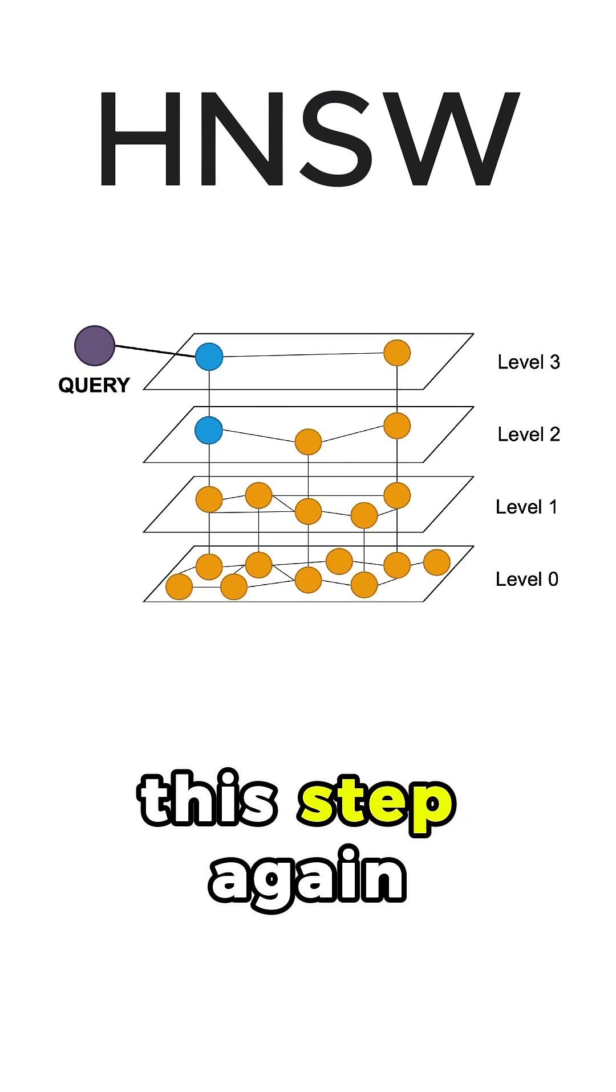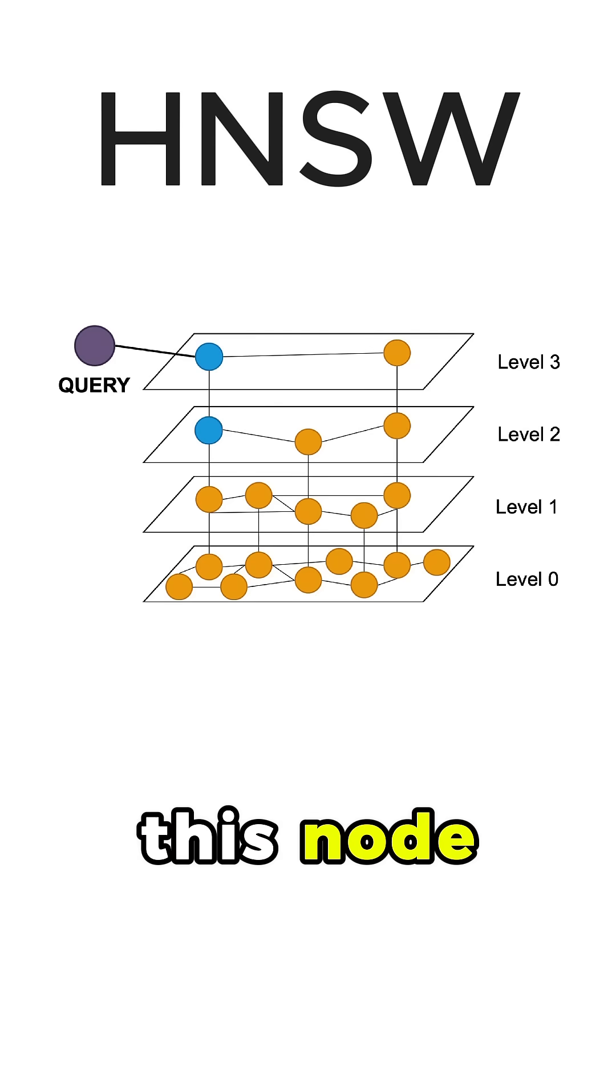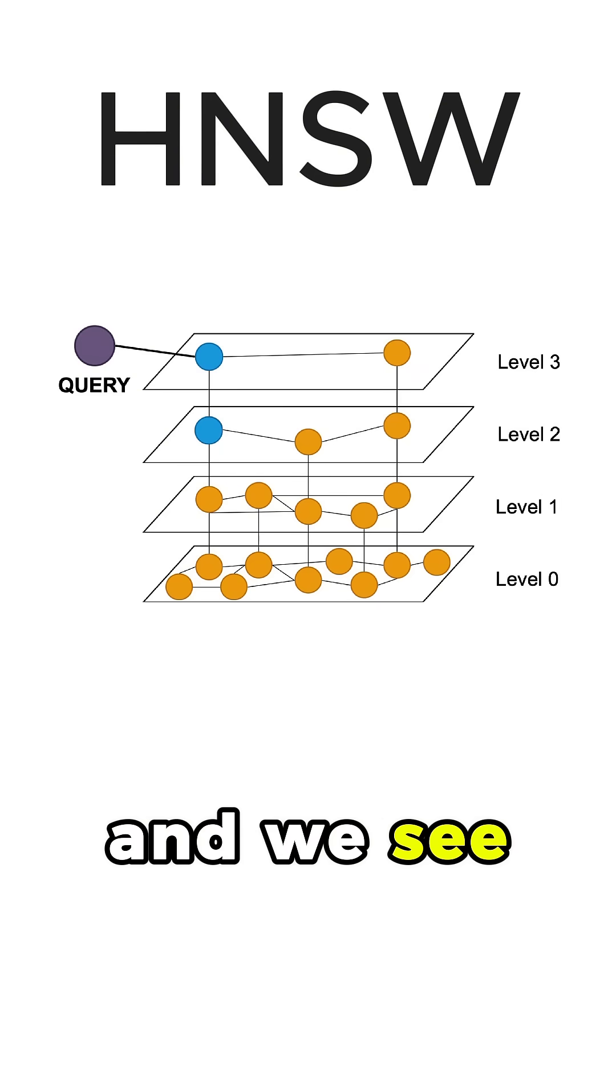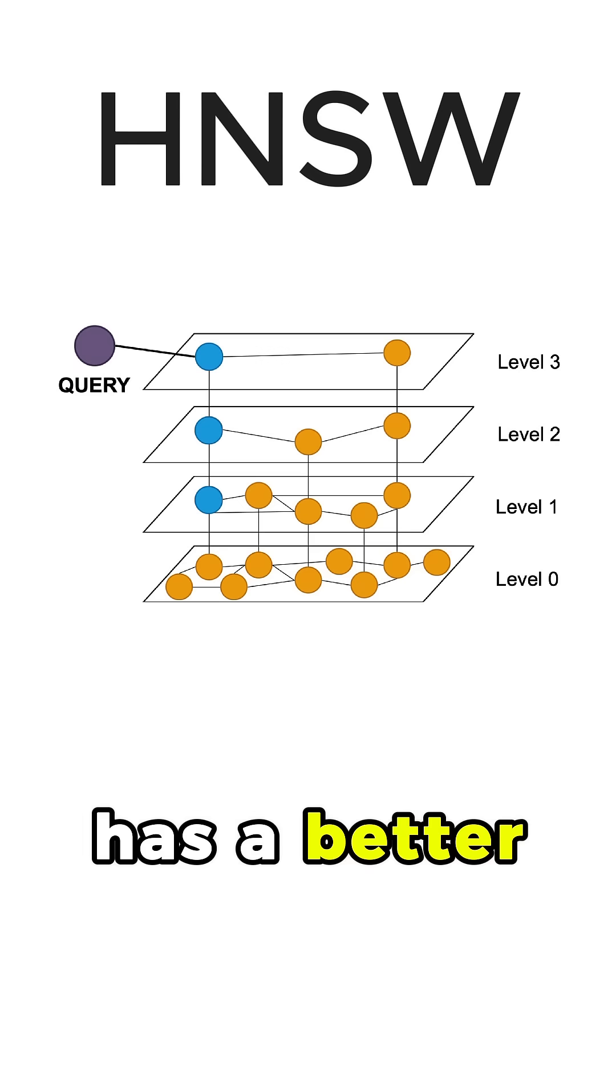We perform this step again. We compute the cosine similarity of this node with the query and all of its neighbors with the query, and we see that this node here has a better cosine similarity score, so we go down again.